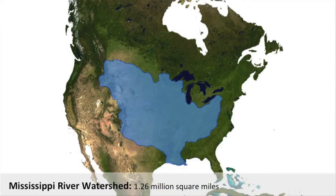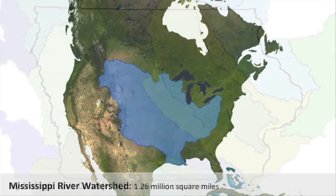Closer to home, the Mississippi River watershed, including the drainage basins of the Red, Arkansas, Platte, Missouri, Ohio, and Tennessee rivers, drains 1.26 million square miles in the United States and Canada. The entire state of Iowa, for example, is located in the Mississippi River watershed.